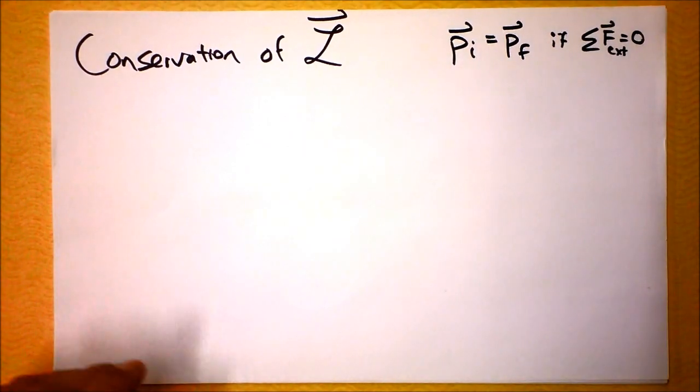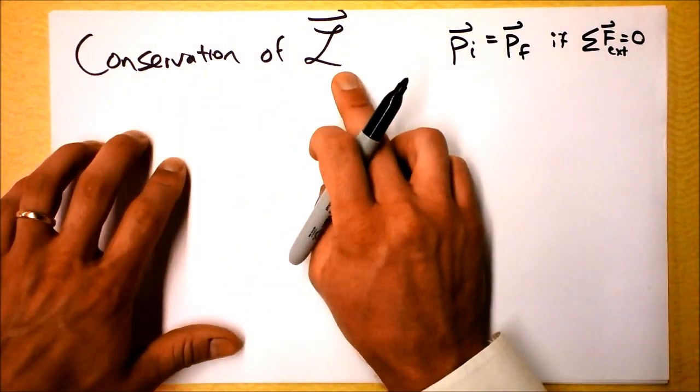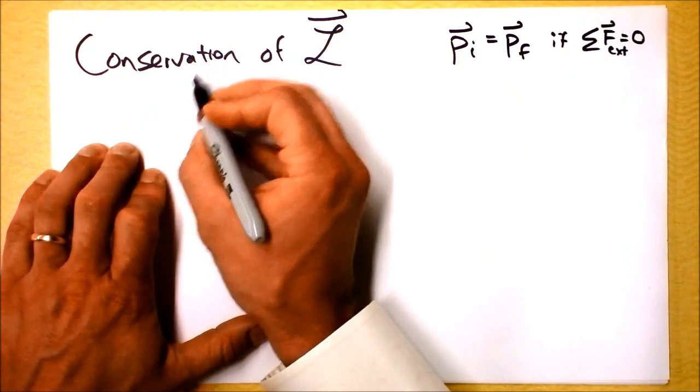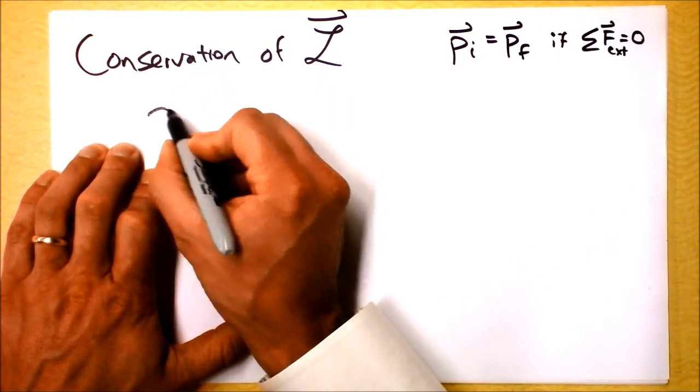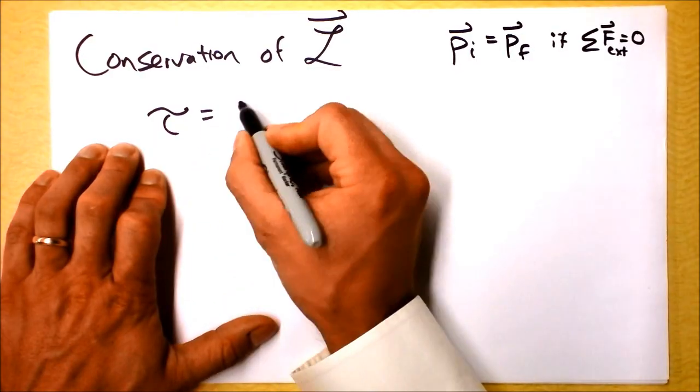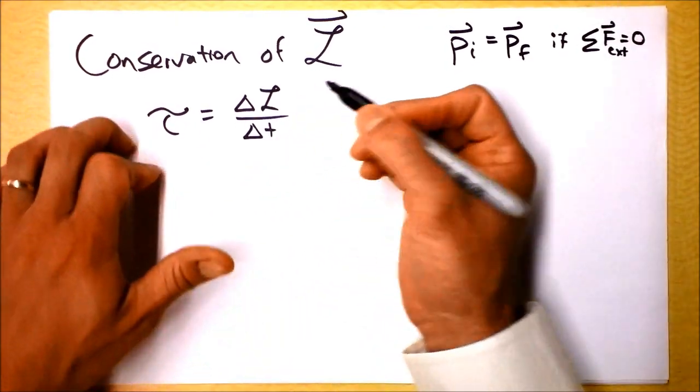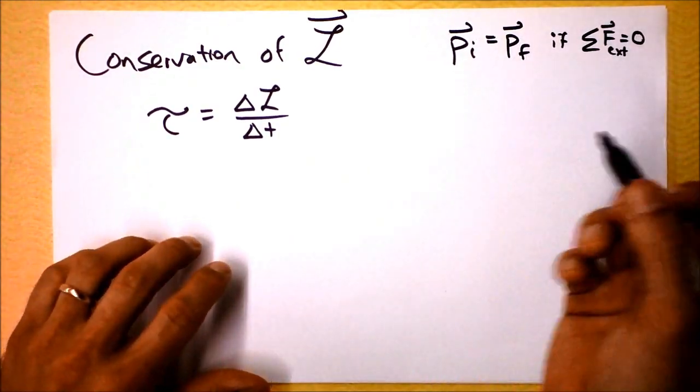So I'm just going to very quickly derive the fact that angular momentum is also conserved, and it's as strong of a statement. We can first note that torque is change in angular momentum with respect to time, and then I guess need to write, I mean, this isn't the calculus definition,